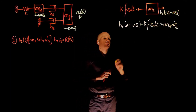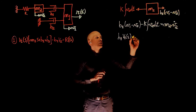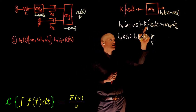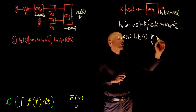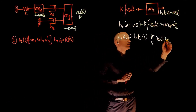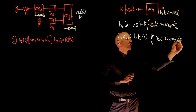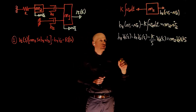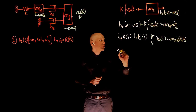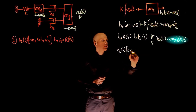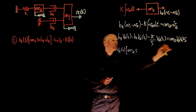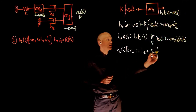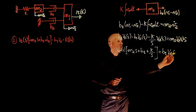Taking the Laplace transform gives: b1*V1(s) minus b1*V2(s) minus (k/s)*V2(s) equals m2*s*V2(s), where 1/s represents the integral of V2(s). Moving all V2 terms to the right side and factoring, we get: b1*V1(s) equals (m2*s plus b1 plus k/s) times V2(s).